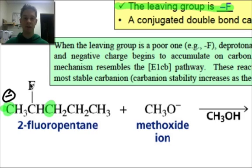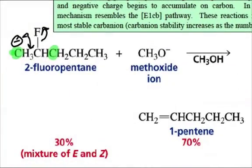And because this is the case, beta elimination from the more stable anion leads to the less substituted double bond. As a result, when the leaving group is very bad, we'll observe the less substituted double bond in greater amounts than the more substituted double bond.